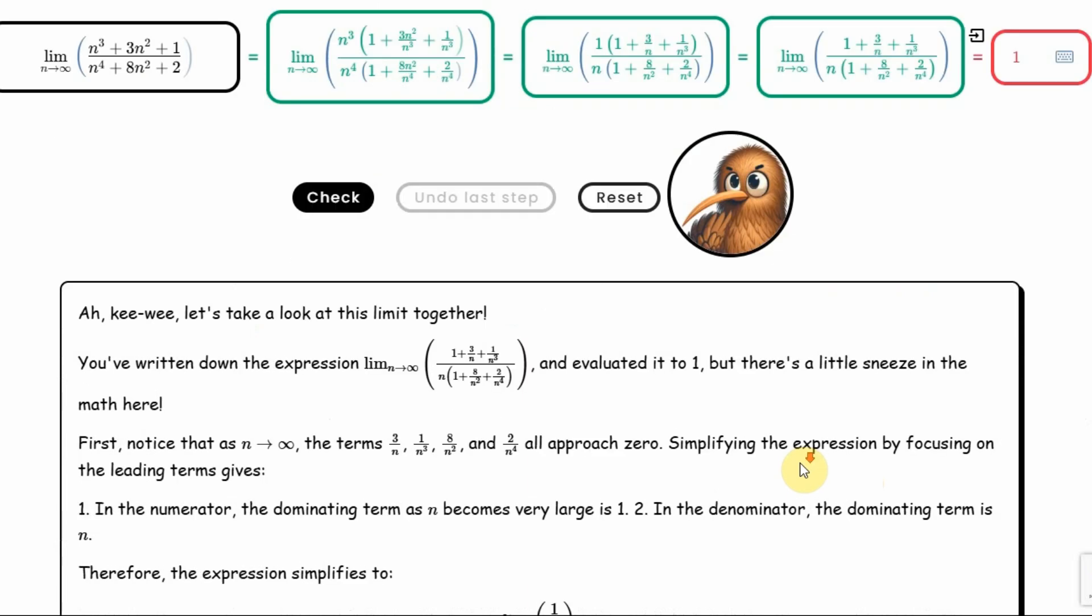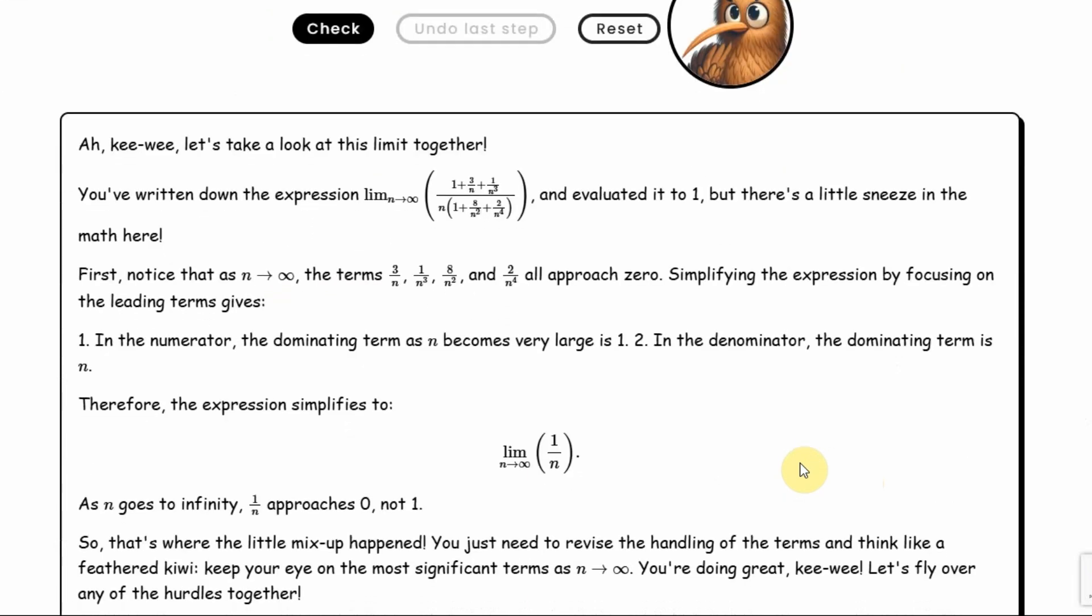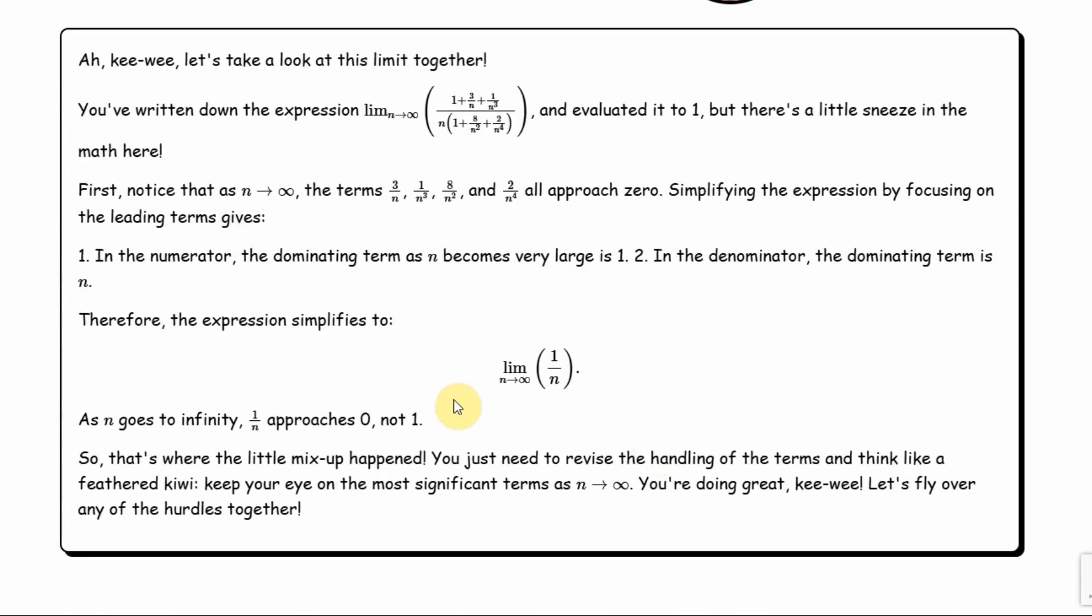And there it is. It thought about it. Let's read what it suggests. That we wrote that it approaches zero. So, a small mistake, right? Actually, he repeated everything that I explained. So, all these components approach zero. So, when simplified, it would essentially leave one over n. And one over n also approaches zero, not one, right?